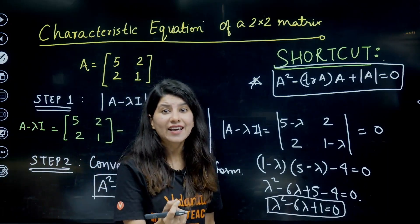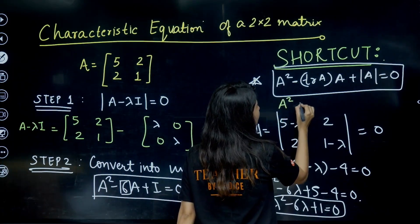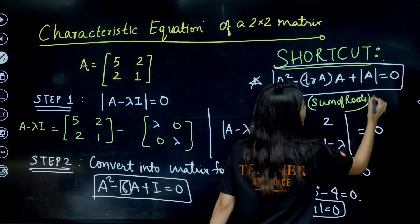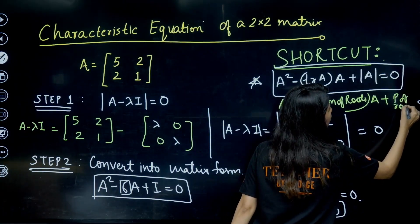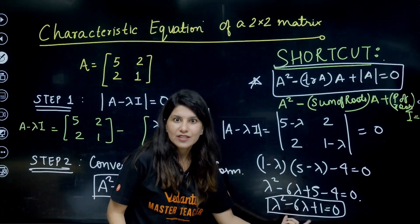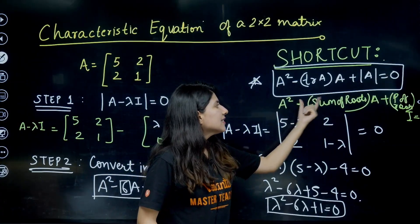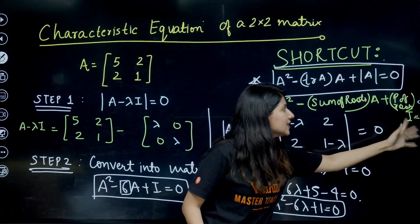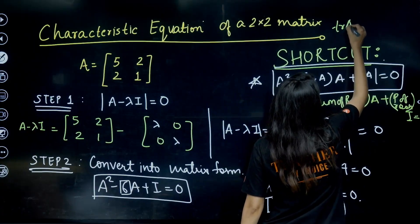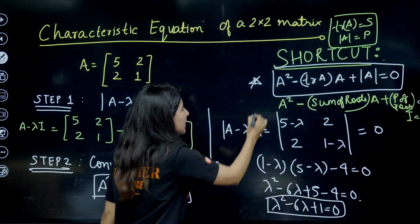One more way to write the same equation: just like a quadratic equation, A² − (sum of roots)·A + (product of roots)·I = 0. Here trace(A) equals the sum of roots (6) and det(A) equals the product of roots (1). So: trace(A) = sum of roots, and det(A) = product of roots. These three facts are what you need to keep in mind.